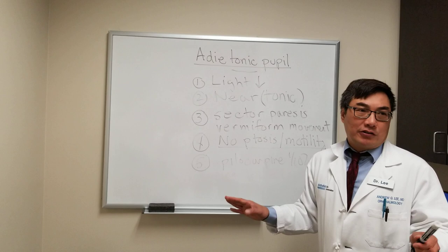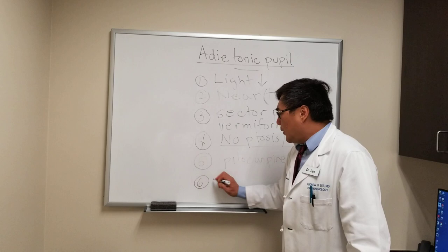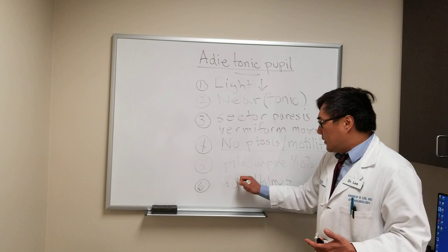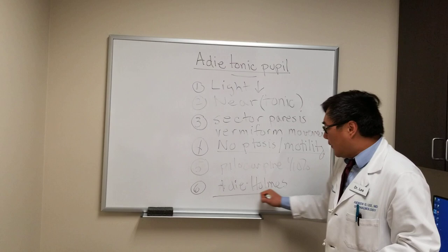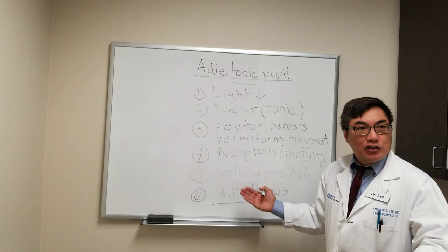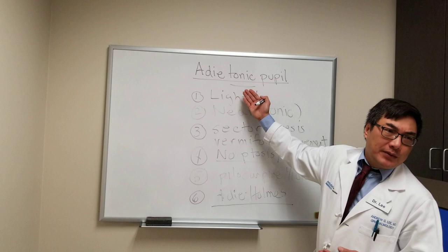Some patients with the Adie's tonic pupil have the full Adie-Holmes syndrome, meaning they have concomitant areflexia. The typical patient is young, female, and otherwise healthy. The term Adie-Holmes syndrome is reserved for the idiopathic variety. If there is a known cause — trauma, surgery such as optic nerve sheath fenestration — we would simply call it the tonic pupil. Adie's tonic pupil is the idiopathic variety.